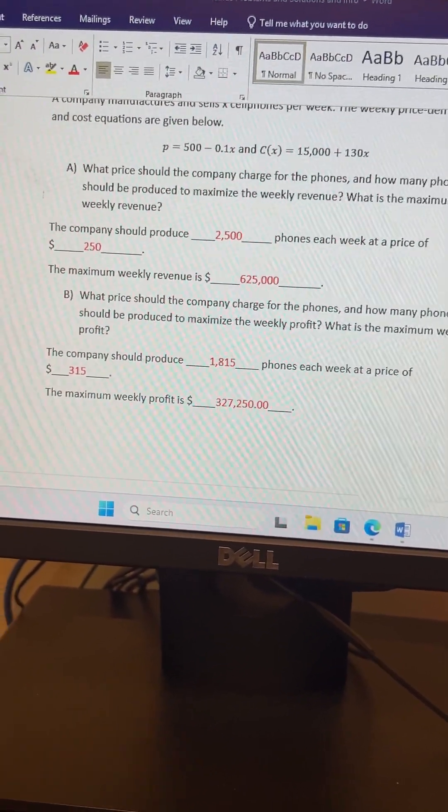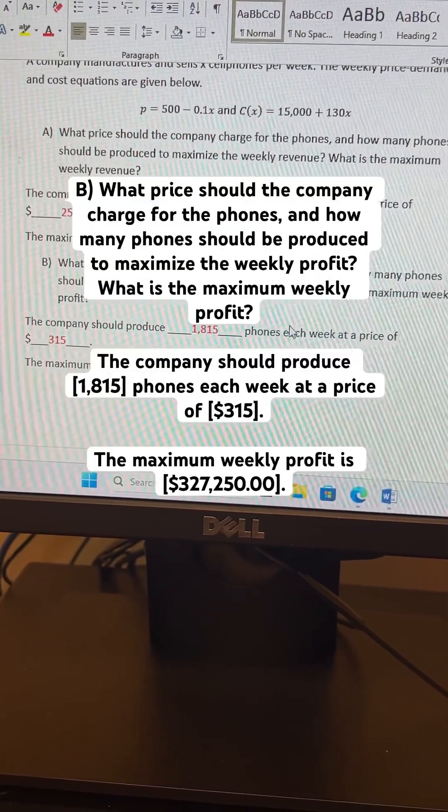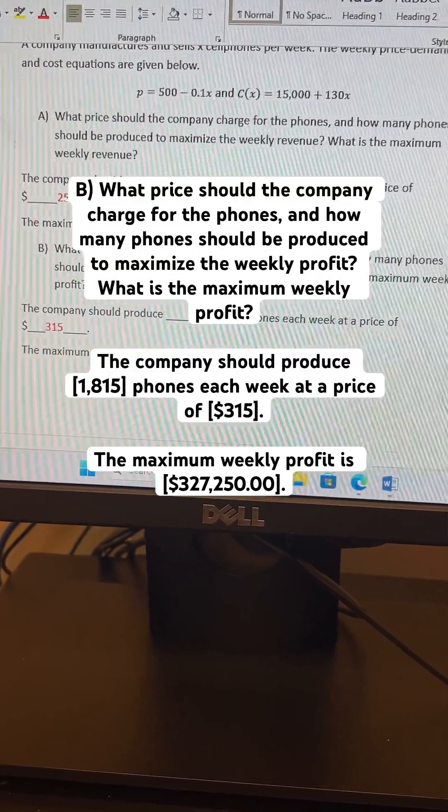So now we've finished with part B and the whole problem. The company should produce 1850 phones each week at a price of $315. Alright, I'm out of time.